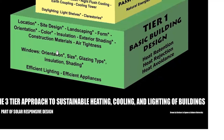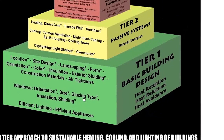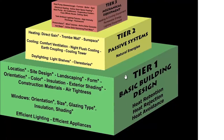For windows, you need to see the size, direction, type of glazing, insulation, and shading devices, as well as efficient lighting and appliances — that is your tier one. At tier two, which is your passive systems, you have natural energies: direct heat gain, Trombe wall, sun space. For cooling techniques, you have comfort ventilation, night flush cooling, earth coupling, and cooling towers. For daylighting, you have light shelves and clerestories.